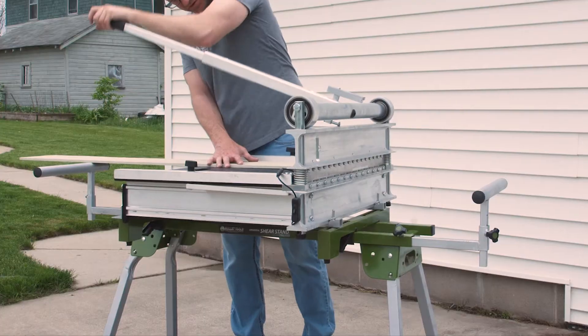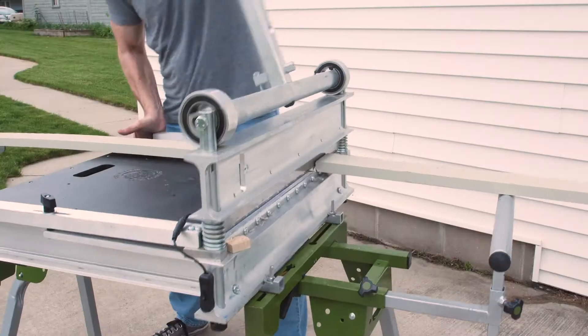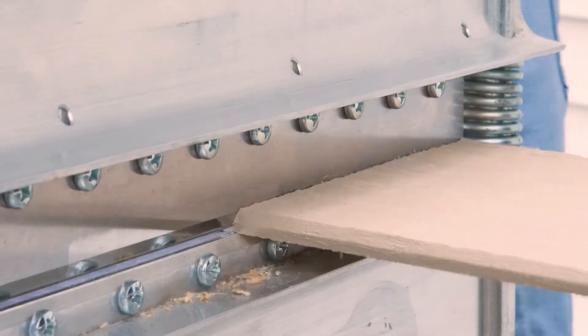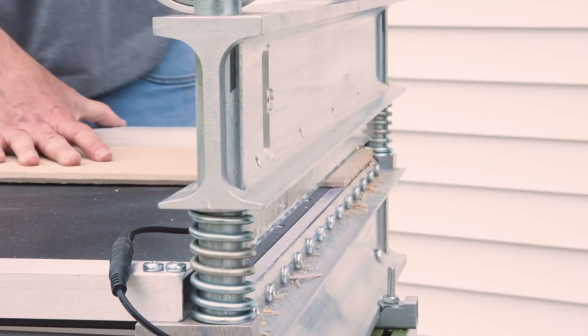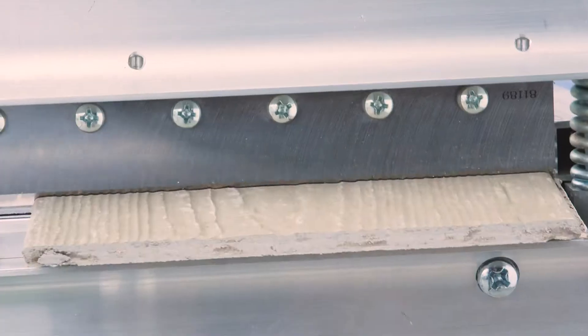cement siding, pressboard lap, vinyl siding, wood siding, OSB trim, fiber cement trim, vinyl trim, PVC trim, and tar and wood shingles.